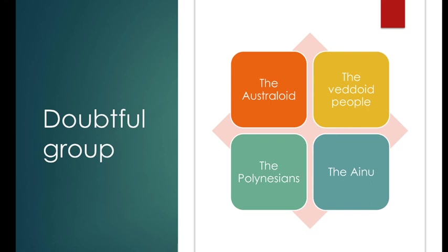Third are the Polynesians. They live on the islands of the Pacific Ocean, including Hawaii, New Zealand, and Easter Island. They comprise a distinctive racial stock formed by the intermixing of the Negroid, Caucasoid, and Mongoloid races.